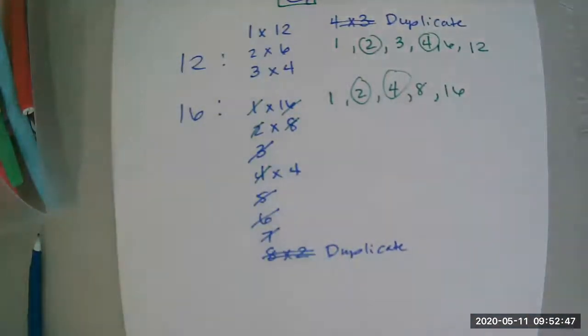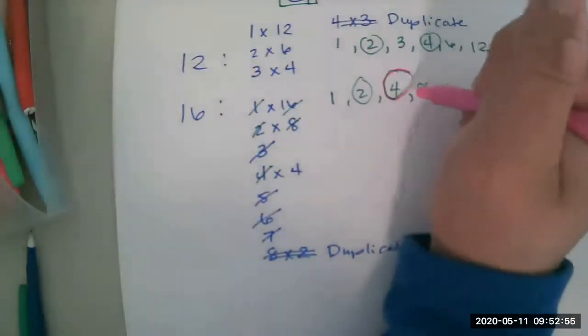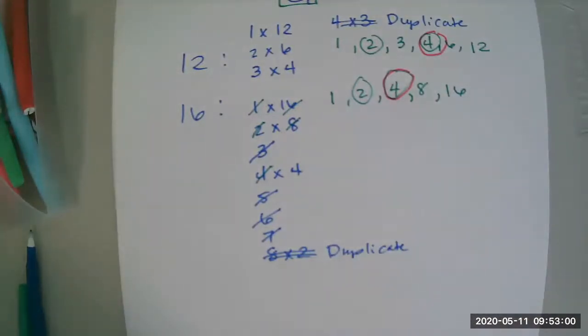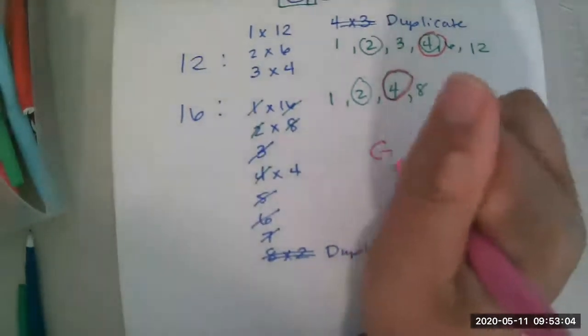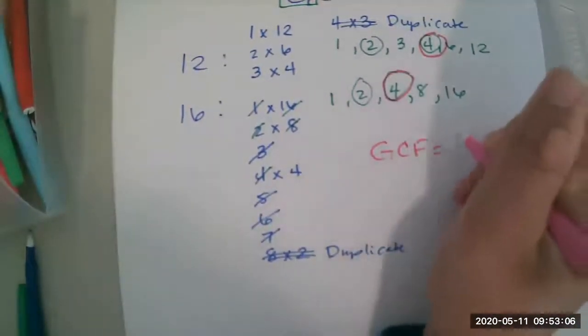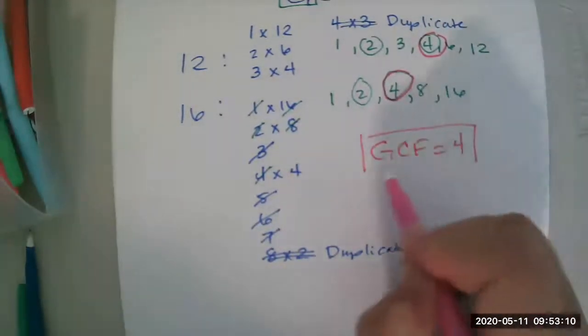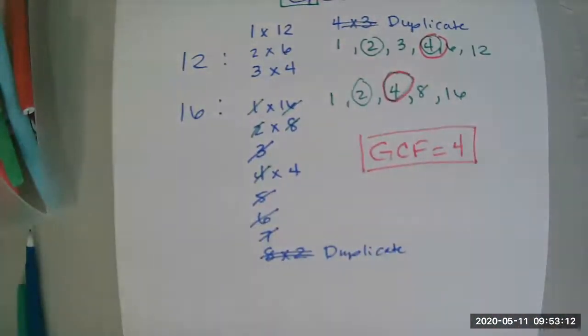So you can see there's multiple factors they have in common. But we're looking for the biggest factor they have in common. And the biggest factor they have in common is this 4. So the GCF, the greatest common factor between 12 and 16, is 4.